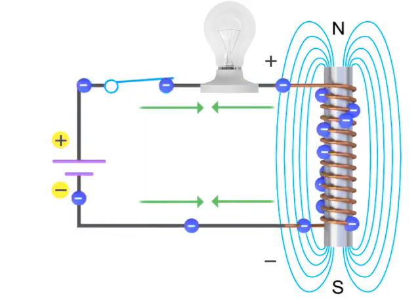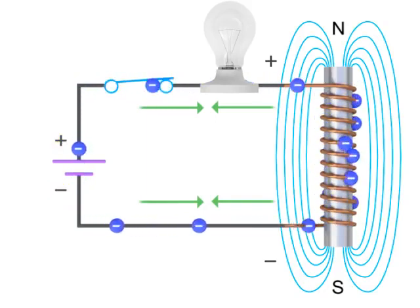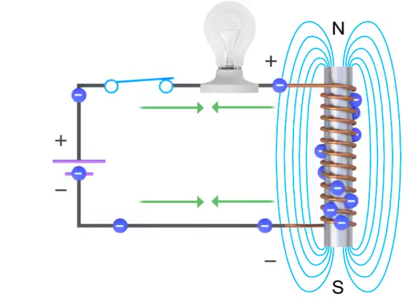The maximum opposition to current flow occurs at the instant the switch is closed. Therefore, the bulb will not turn on instantaneously.